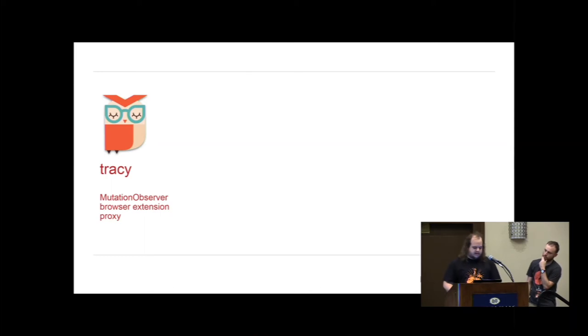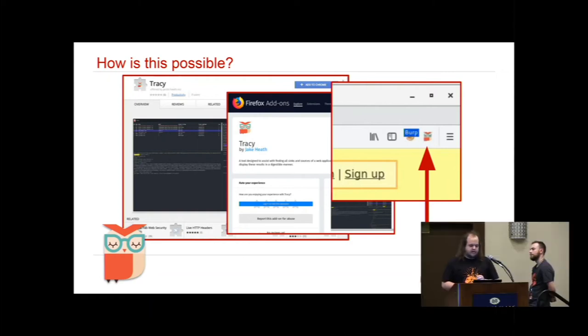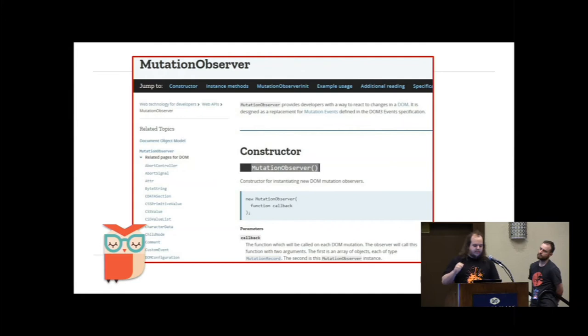Tracy has three main components: the plugin, the API server, and the proxy. The plugin, or browser extension, uses a set of APIs to monitor the DOM. Your normal workflow is to install this extension into your browser. Each page you load uses the mutation observer API. You can set a mutation observer on the whole DOM, and whenever there is a mutation - any write or modification of an attribute - it fires an event. We can then look at those writes and determine if our user input was ever written to the DOM and how.